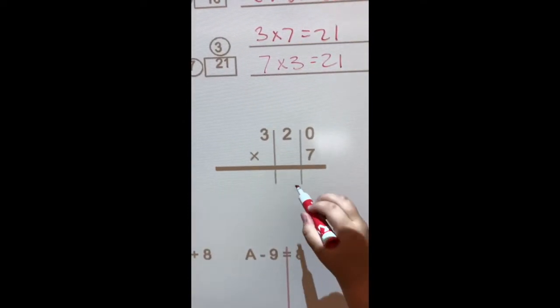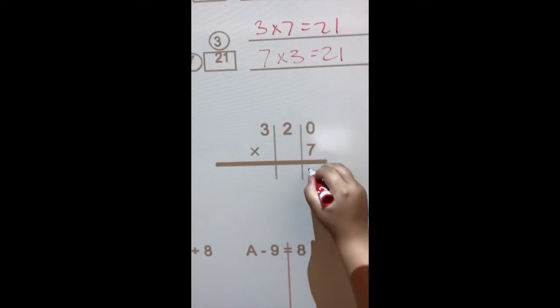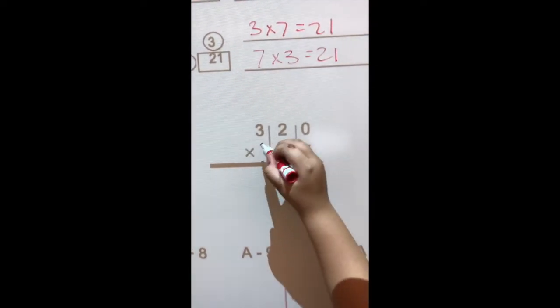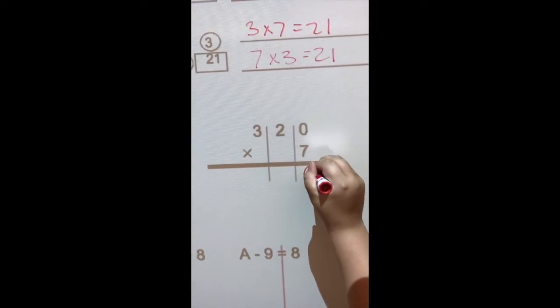So, 7 times 0 would... touch the numbers as you see them, okay? 7 times 0 would equal 0. Good.